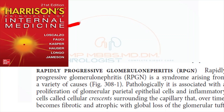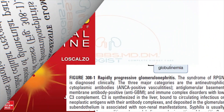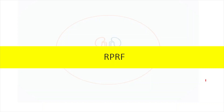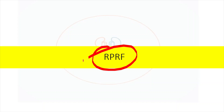Most UG students try to study from Harrison, but once you've seen Harrison, you'll find that rapidly progressive glomerulonephritis is described as a syndrome arising from a variety of causes — the definition is not clear and is associated with some proliferation, which is confusing. Even where it is mentioned as a clinical diagnosis, there is no proper definition. So undergraduates not exposed to core concepts of nephrology might get confused if they directly touch Harrison. Before understanding RPGN, the student must be aware of what RPRF is.